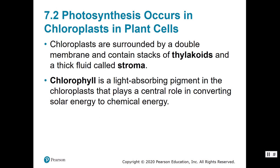That's the structure of a leaf, but objective two also asks us to describe the structure of a chloroplast. Chloroplasts have a double membrane — an inner and outer membrane — and stacks of thylakoids. Thylakoids are membranes that look like little green coins piled on top of each other. Around the thylakoids you have a thick fluid called stroma, which surrounds them. Chlorophyll is an important light-absorbing pigment in chloroplasts that plays a key role in converting solar energy to chemical energy.